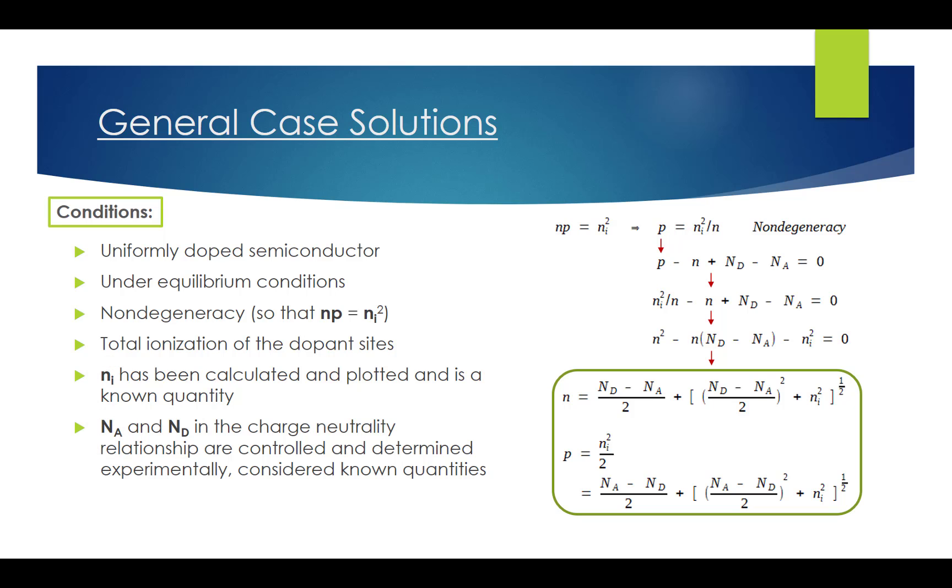So under the assumption of non-degeneracy and equilibrium conditions, we first use the np product relationship to get the expression for p, then substitute this expression into the charge neutrality relationship. After solving the quadratic equations for n, we then reach the final expressions for both n and p. Note, only the plus roots have been kept in the n and p expressions, because physically, the carrier concentrations must be greater than or equal to zero.